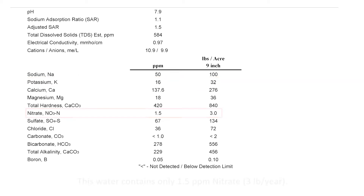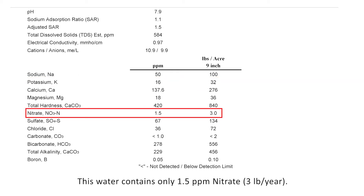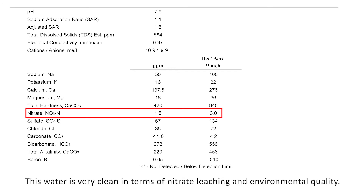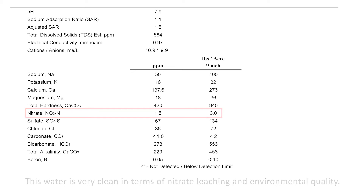You'll notice this well in particular only has 1.5 parts per million nitrate-N, so it's actually a very low nitrogen content irrigation water. Only maybe 3 pounds of nitrogen would be going on if we apply the 9 inches. So this is a clean water source — there's no nitrate leaching into this water table.